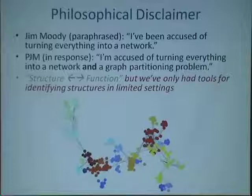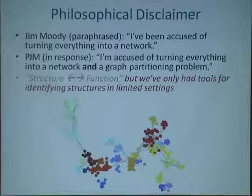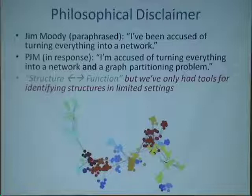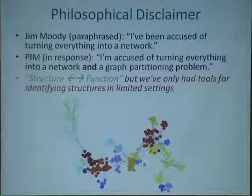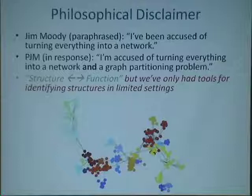A caveat is best summarized by my colleague Jim Moody, leader of the Duke Network Analysis Center. Jim is a well-known sociologist in the tradition of social network analysis, and he's been accused of turning everything into a network. My response was: at least you're only accused of turning everything into a network — I'm accused of turning everything into a network and then trying to turn it into a graph partitioning problem. You'll see that in some of the work highlighted in the first half of the talk.